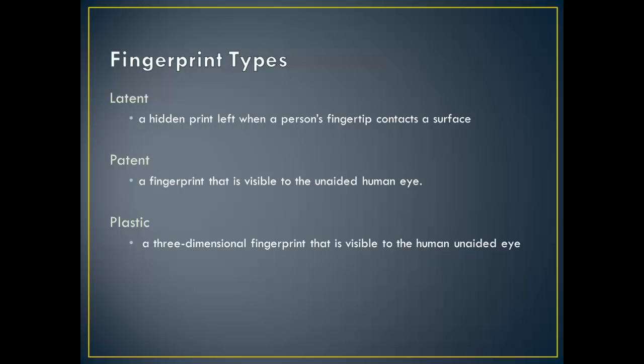Latent prints are those which are left behind when someone contacts a surface and they are not visible to the naked eye. Latent prints are collected by the use of investigative tools such as fingerprint powder or chemical reagents. Patent prints are those that are visible to the naked eye and can originate from prints that have been in contact with things such as blood, ink, or other materials. Plastic prints are also visible to the naked eye and are found in three-dimensional form, such as in a bar of soap, candle wax, or a chewed piece of gum or putty.